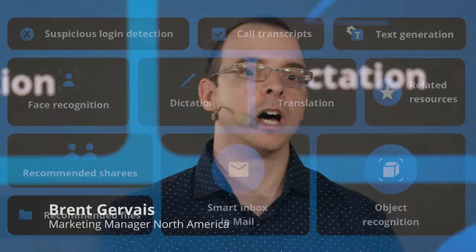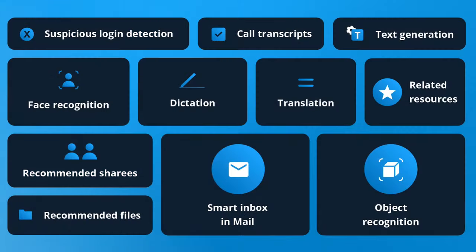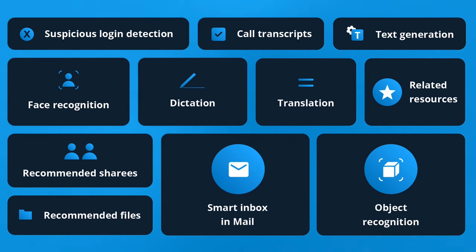Let's quickly have a look at some of the AI features in NextCloud that already run locally and 100% open source. For example, we have face and object recognition, and that doesn't send your photos to third parties. Our smart inbox in mail is trained on your data and on your server. Call transcripts, as well, are generated completely without data leaks.